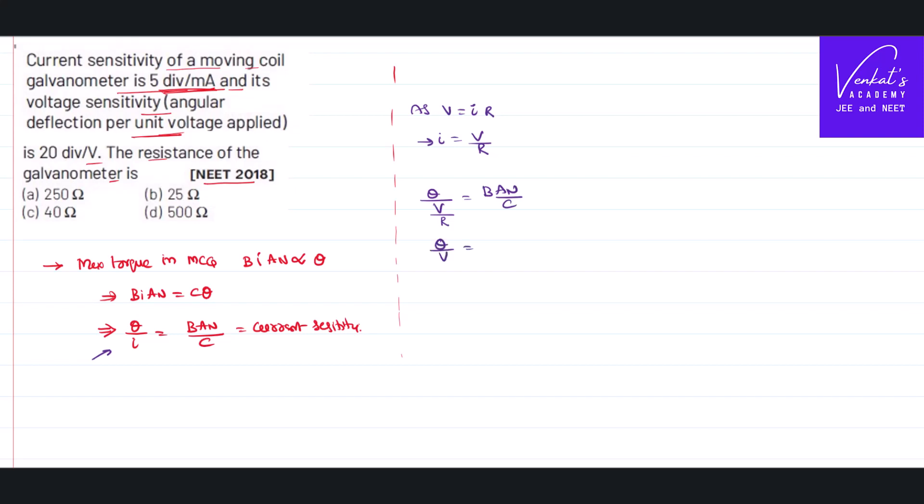When you write theta by V, R comes to the numerator: B*A*N by C. That implies theta by V equals B*A*N by C*R. This theta by V is called voltage sensitivity, which is also given in the problem. Now you want the resistance of the galvanometer. Once you know both of them, write current sensitivity divided by voltage sensitivity and see what happens.